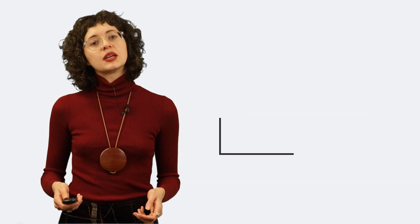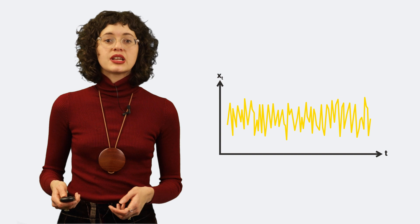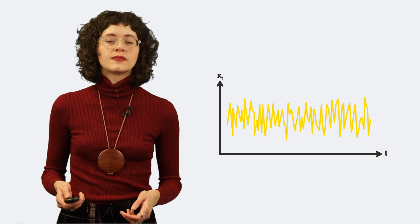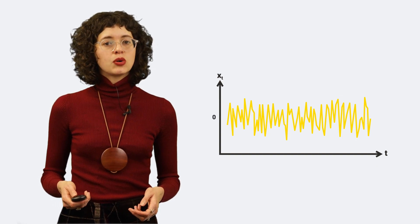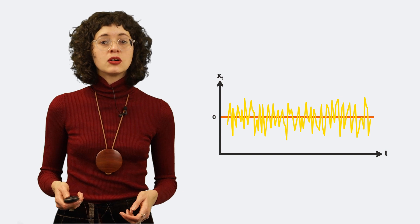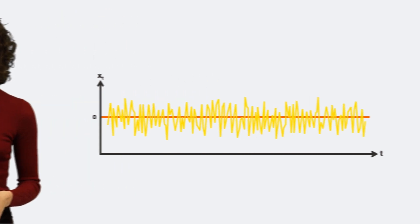A white noise time series, also known as random shock, is a great example of weak stationarity. Its random variables have a constant population mean and are uncorrelated. It does not matter at which point in time you observe the white noise. It should basically look the same at any point in time.